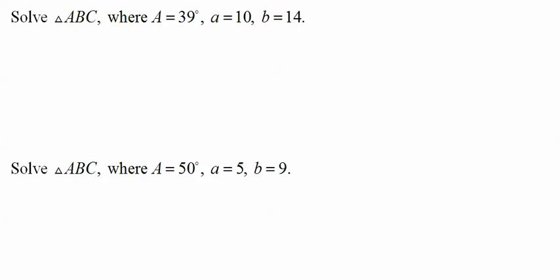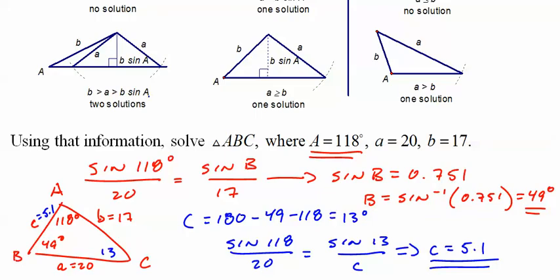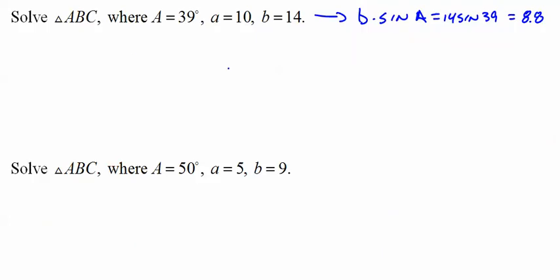This next example will have two solutions. Calculate b·sin(A): 14 times sine of 39° equals 8.8. Since b (14) is greater than a (10), which is greater than b·sin(A) (8.8), you're going to have two solutions.